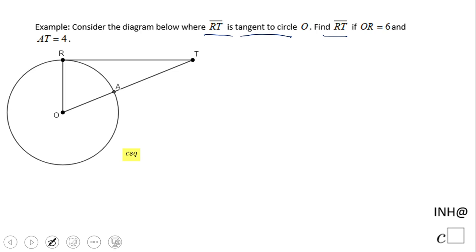That is very important. And what else do we know? We know OR is 6 and AT is 4.